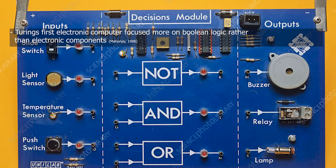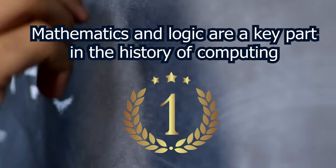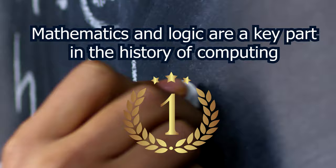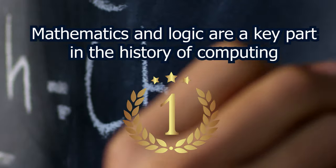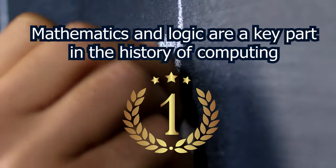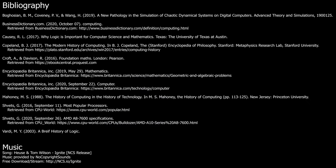However, the first electronic computer focused more on Boolean logic rather than electronics. In conclusion, I believe that mathematics and logic are a key factor in the history of computing, as they allowed for innovation from the abacus to computers today, whereas all the technological advancements were only needed to overcome the limitations in speed and memory at the time. Thank you for listening.